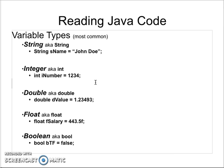A double, which is similar to a number, is a number that does have a decimal with digits beyond the decimal point. So you can have 1.23493 — that is a double number.